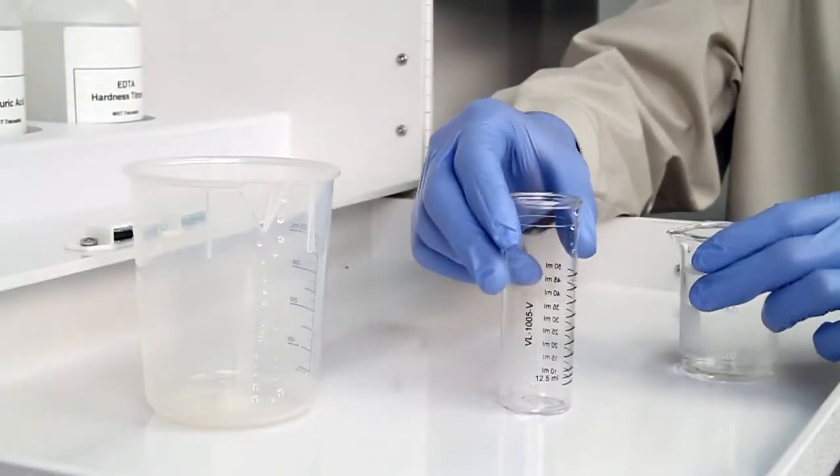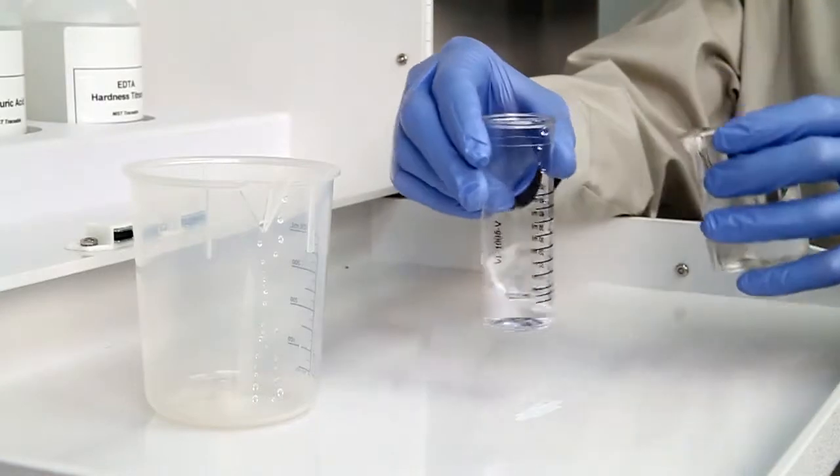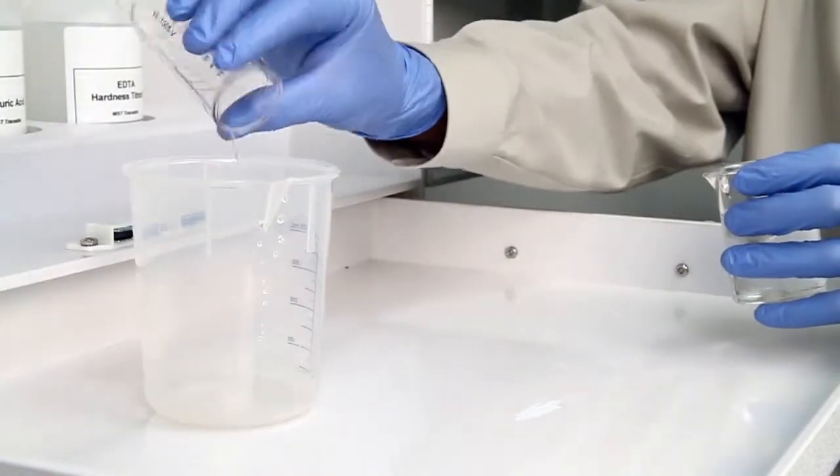The first step according to the EndpointID procedure is to collect an accurate sample. The smallest change in sample size will lead to inaccurate results.